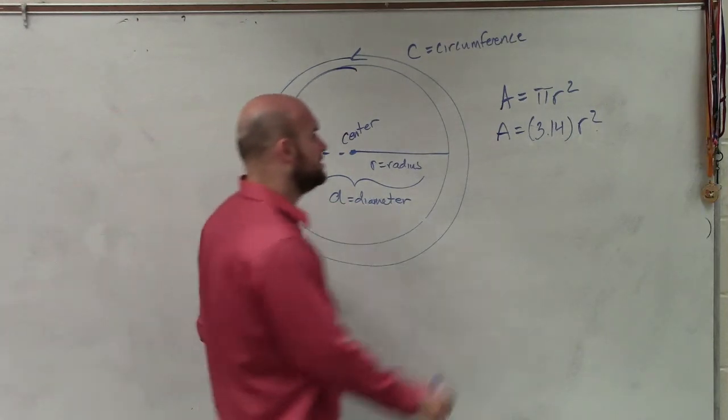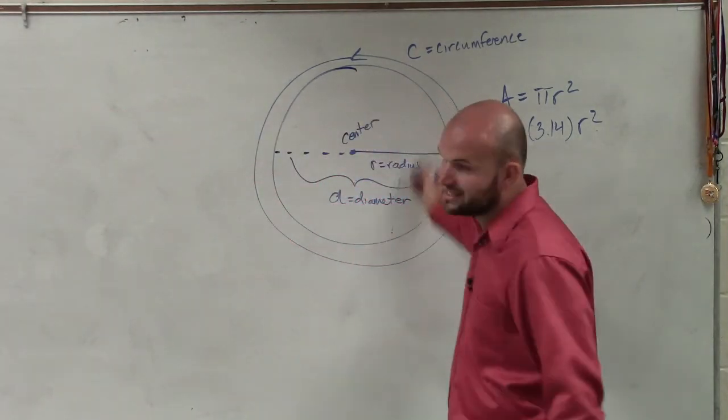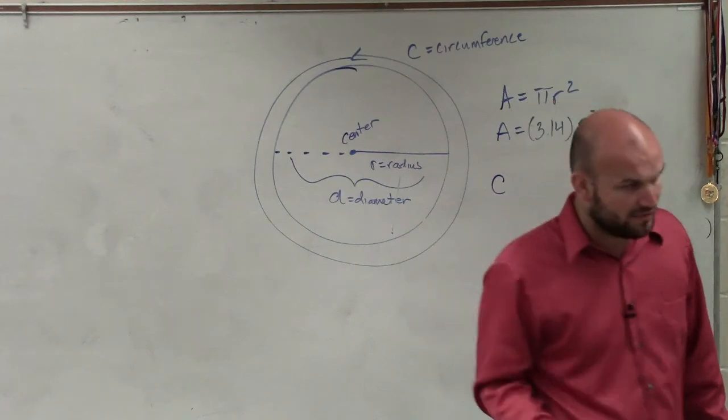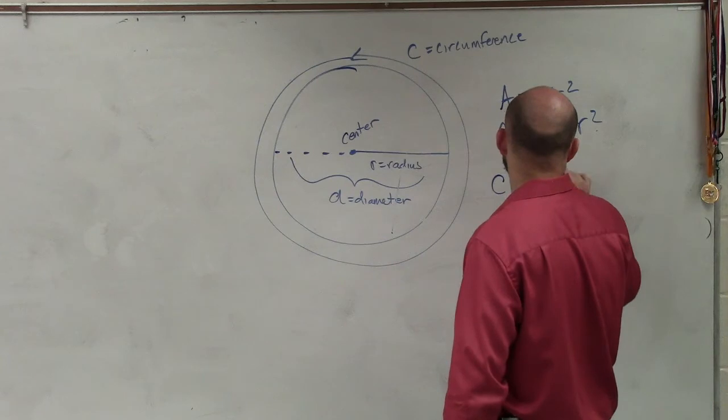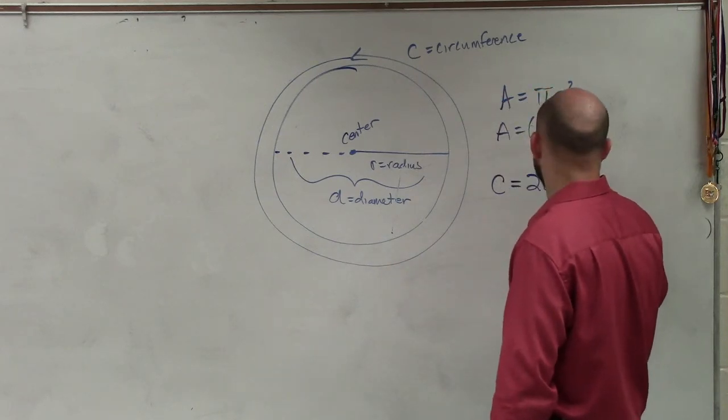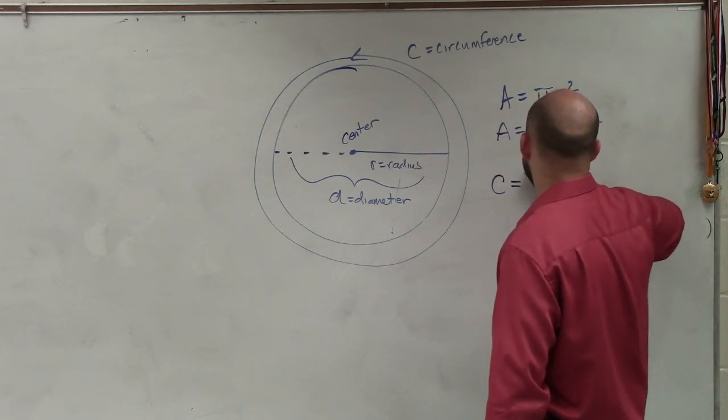And then the last one is circumference, which is the distance around, kind of like the perimeter of a circle, is going to be diameter times pi.